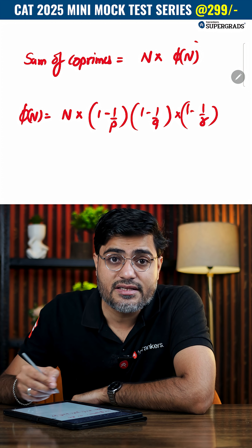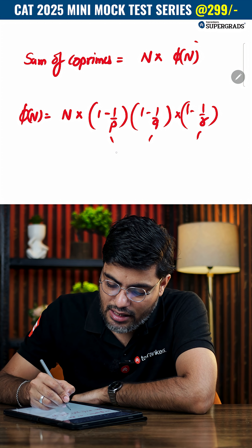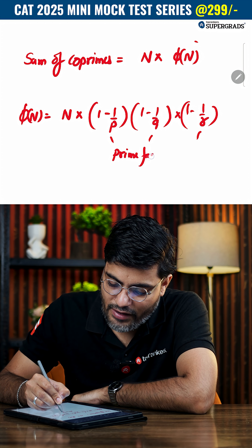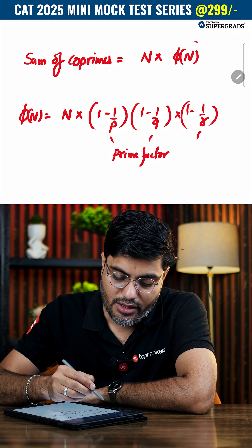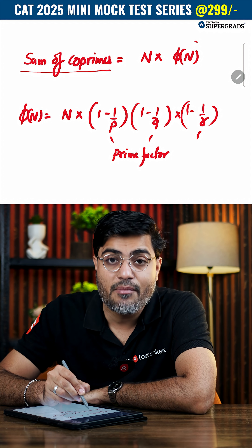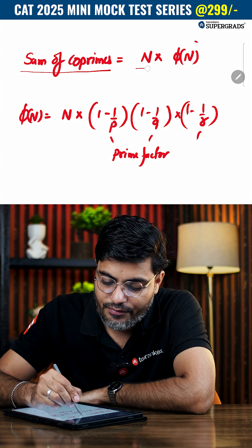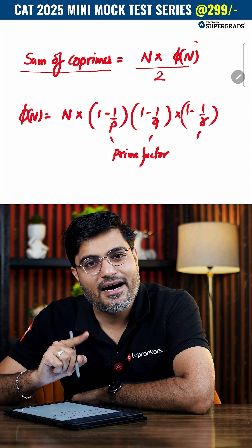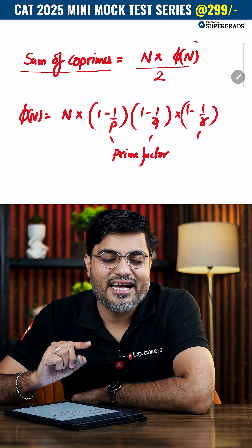Here, p, q, and r are the prime factors of n. If you know this Euler number, you can directly calculate the sum of co-primes, which is n × φ(n) / 2. Go ahead, apply it, and keep liking, sharing, and subscribing!